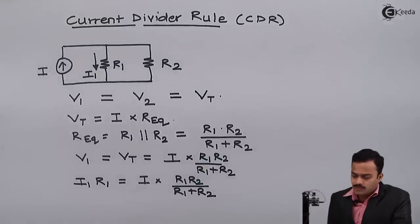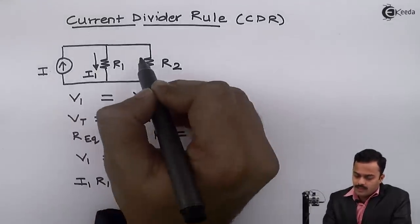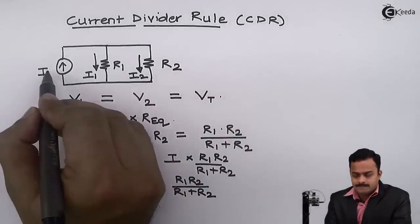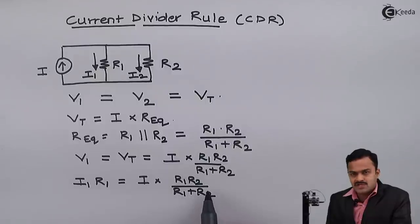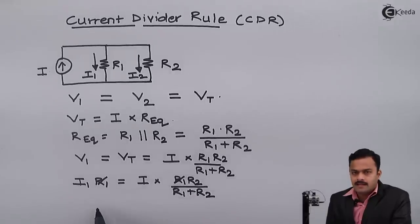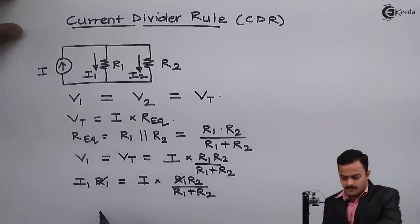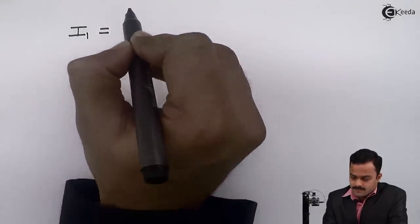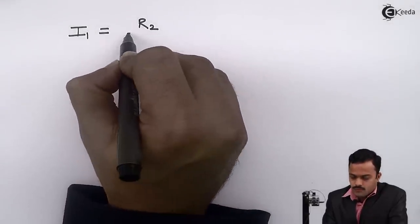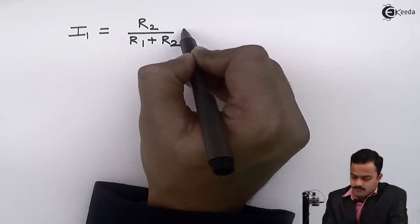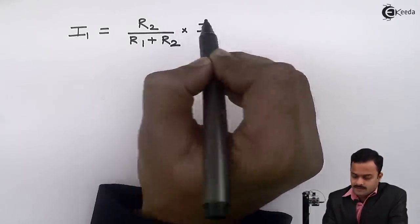My job is to find out current I1 and this current I2 using R1, R2 and I. So if I see this expression carefully, I will come to know this R1 and this R1 I can cancel out, and then I can say current flowing through the R1, which is I1, equals R2 divided by R1 plus R2 multiplied by total current in the circuit.